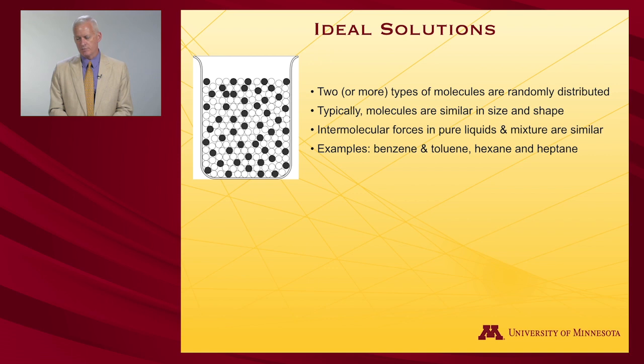We have two types of molecules in the binary. They're randomly distributed, so who knows where they might be in the beaker. Typically, in an ideal solution, the two molecules involved are going to be similar in size and shape. Here I have little spheres, little black spheres, little white spheres. It'll also generally be true that the forces between the liquids with themselves and interacting with the other component are rather similar to one another.